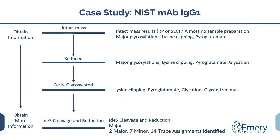Here we summarize the type of information obtained through intact and subunit LC-MS analyses. At the top, the intact mass can be determined with either a reverse phase or size exclusion LC-MS analysis. Information on major glycosylations, lysine clipping, and pyroglutamate formation is obtained. The SEC method is also useful for analyzing the drug-to-antibody ratio for antibody-drug conjugates. With reduced or deglycosylated proteins, additional characterizations become available. Glycation, lysine additions, and more in-depth glycosylation information become available. The most detailed information came from samples which were reduced and digested with the IdeS enzyme.